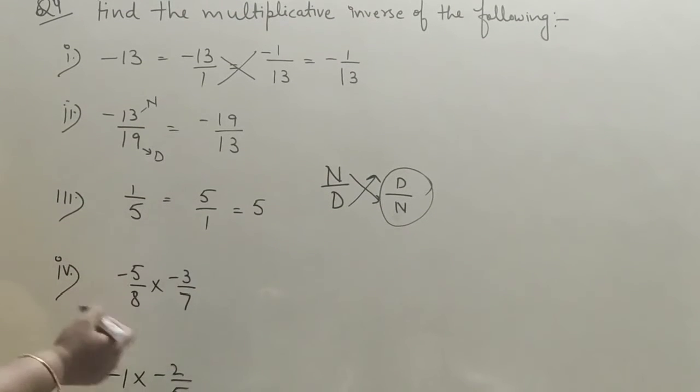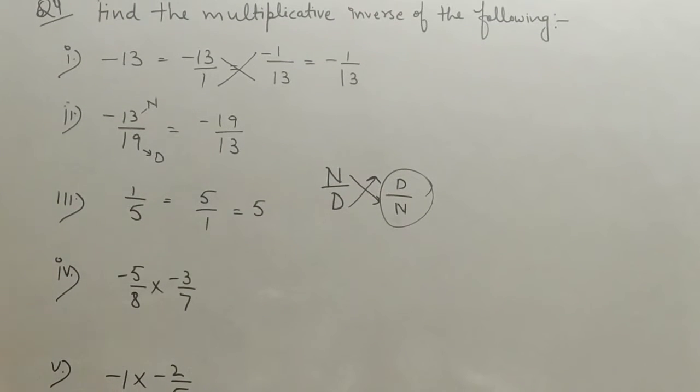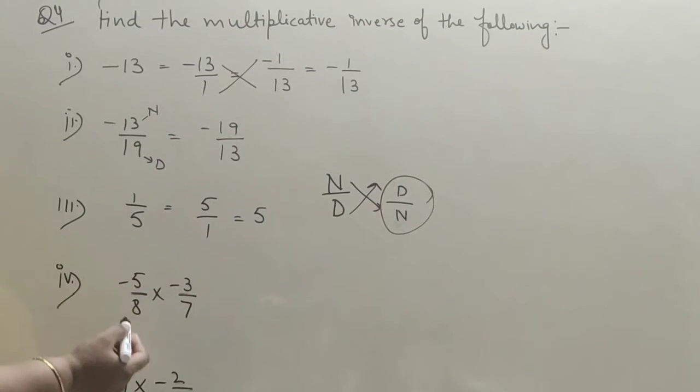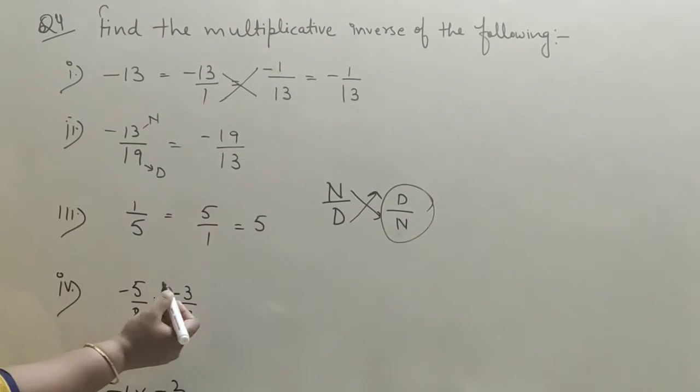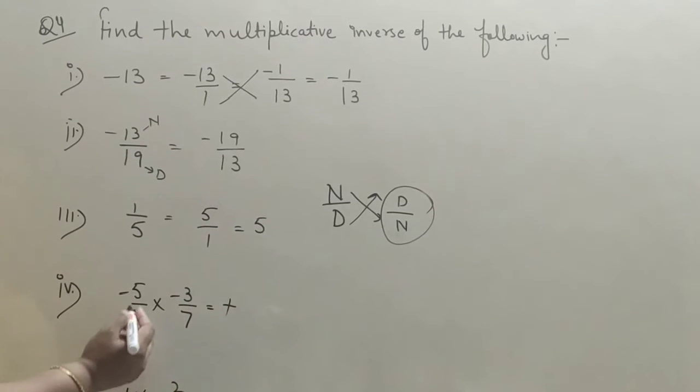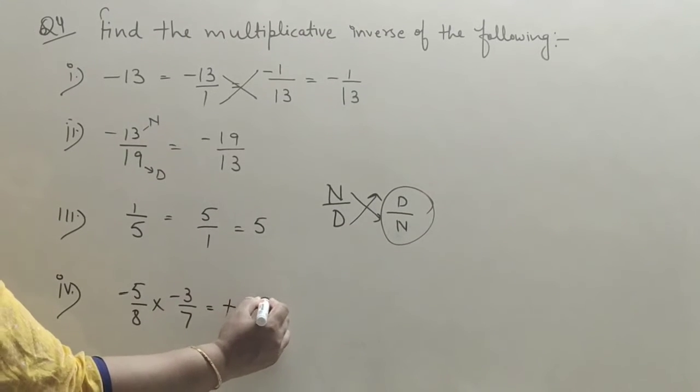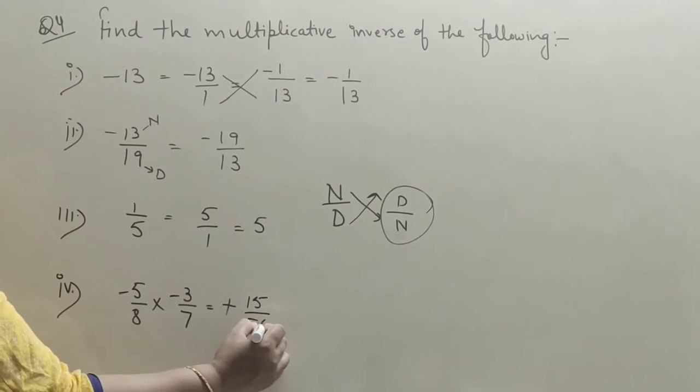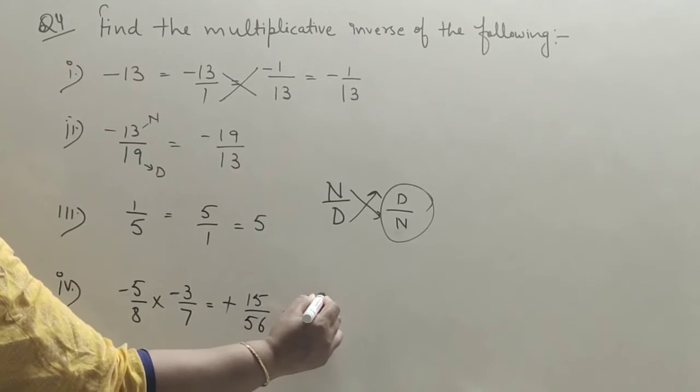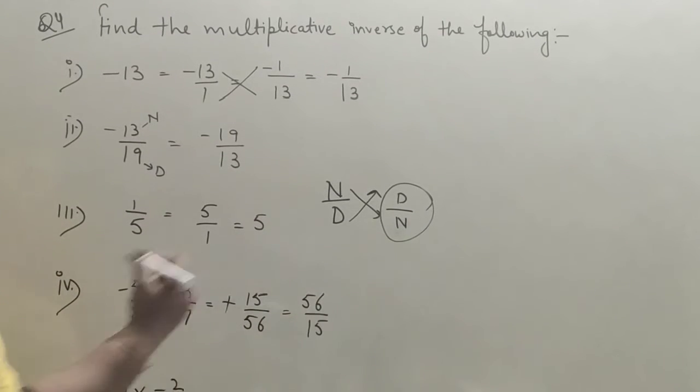Now the fourth part is multiplication. First we have to solve this multiplication and then find the multiplicative inverse. Here are two negatives, so answer will be positive. 5 times 3 is 15, and 8 times 7 is 56. So the multiplicative inverse will be 56 upon 15.